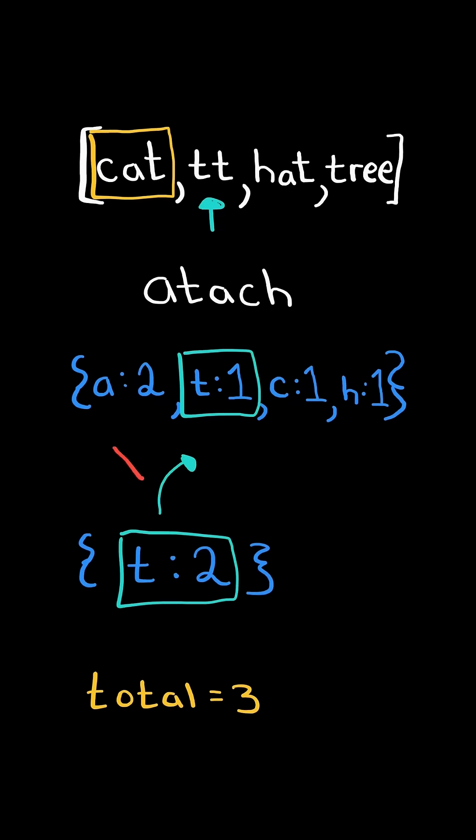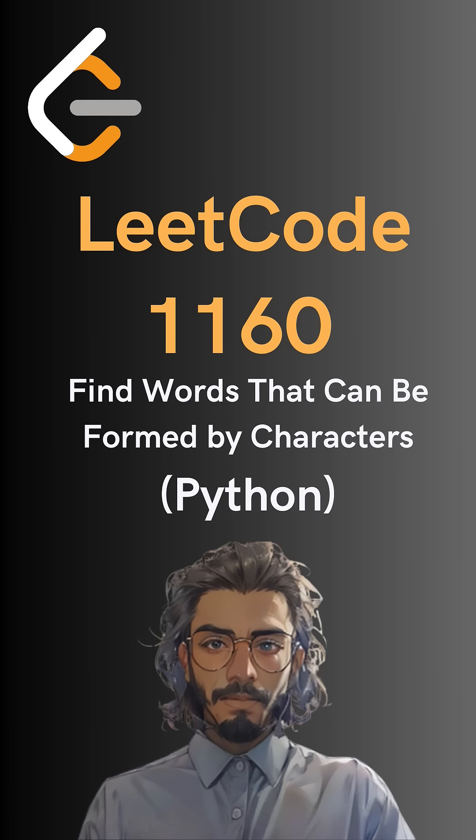Consider the word tt. Its frequency is not less than or equal, so we do not add it to total. Here's the code to do so. Please like and follow for more.